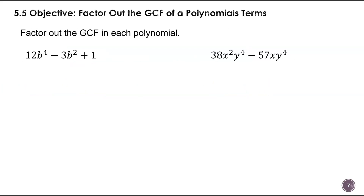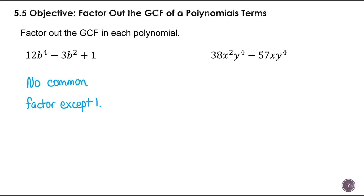On this next expression, I have a negative 3 and a 1, so there's nothing in common with my coefficients. I have b to the 4th, b to the 2nd, and a term without b. When this happens, we can't factor it — there is no common factor except 1. If that happens, it just doesn't factor. Later, when we get into trinomials, we might call something like this prime.